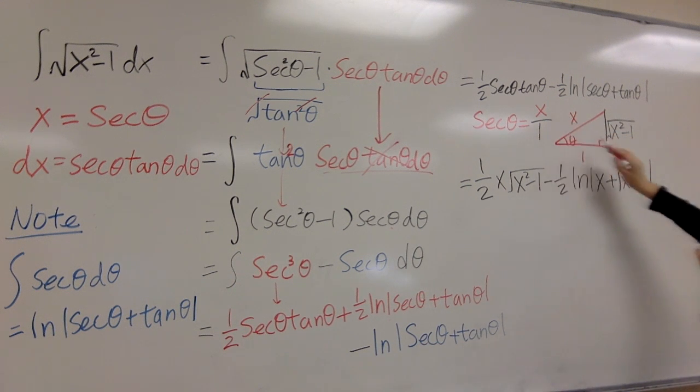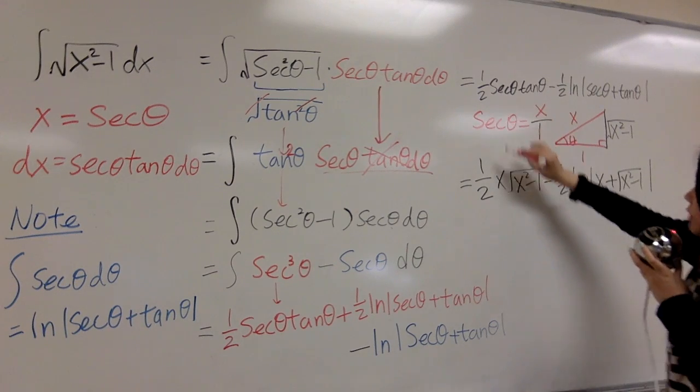You can look at it, and you can find out tangent theta is square root of x squared minus 1 over 1, and just rewrite it here.